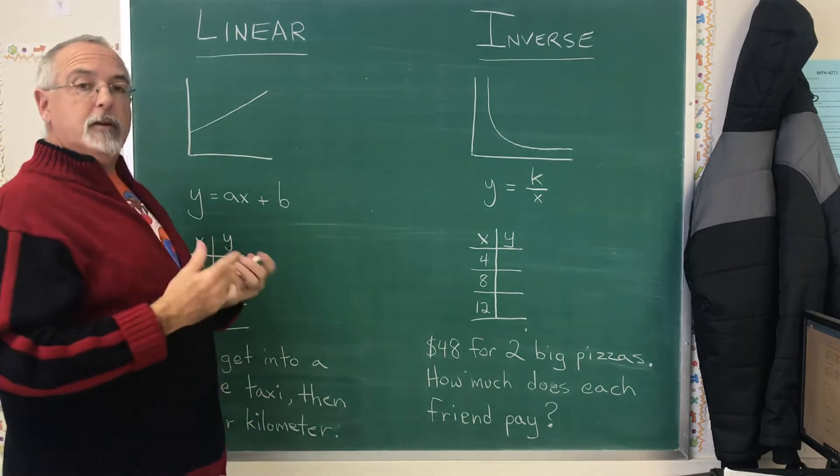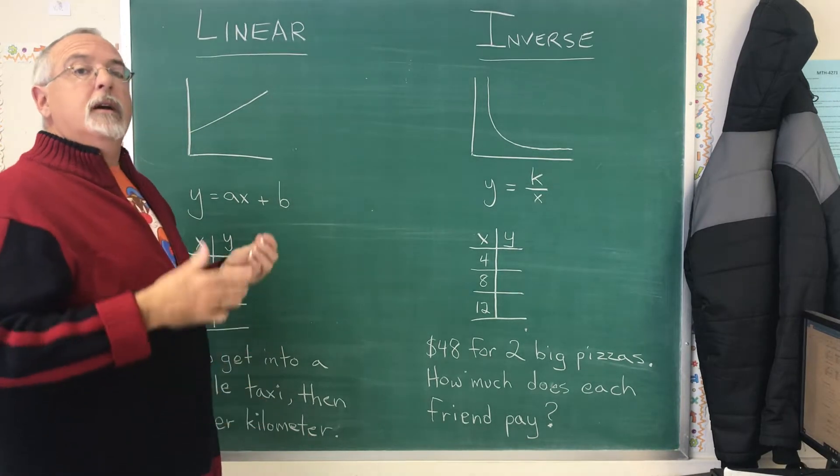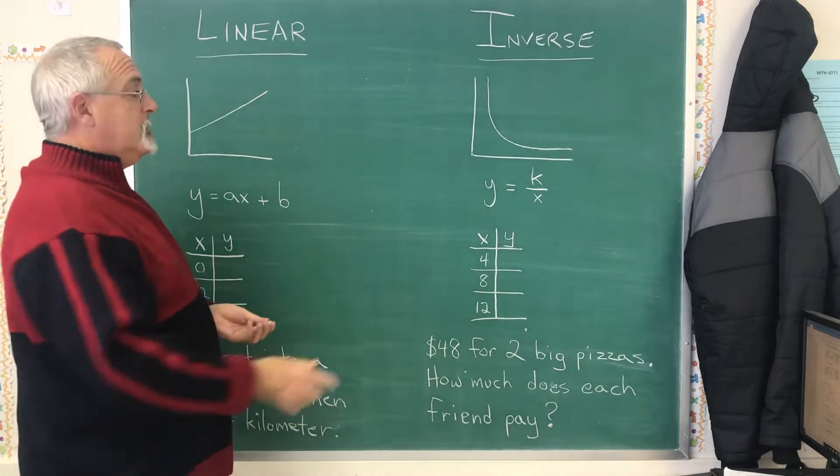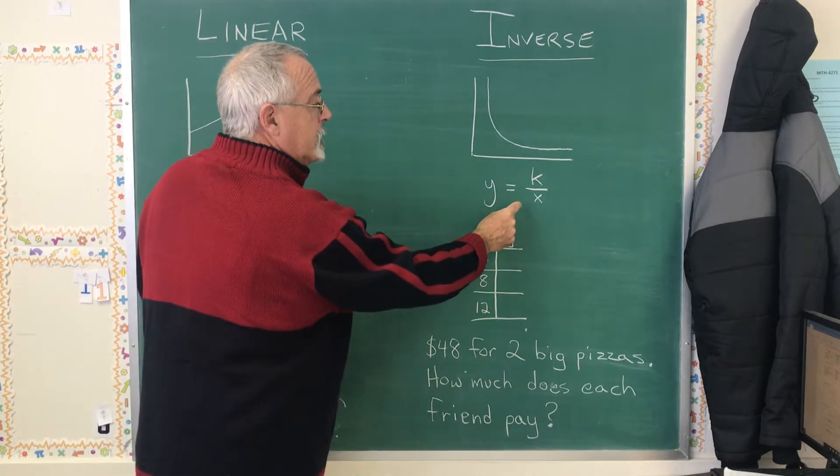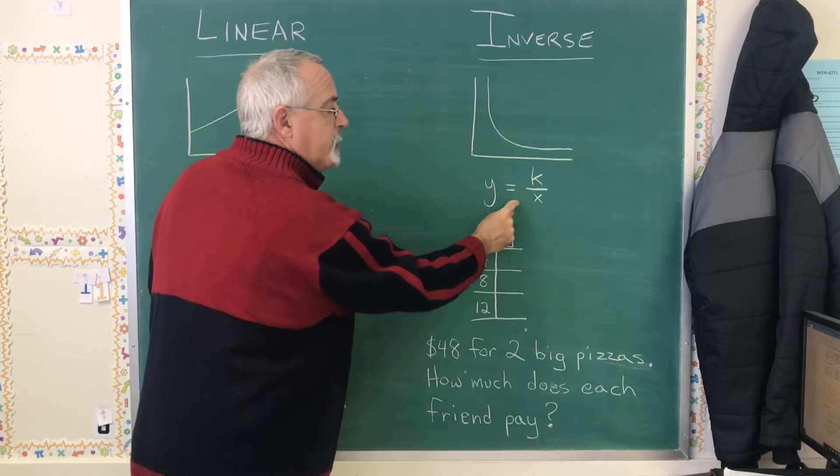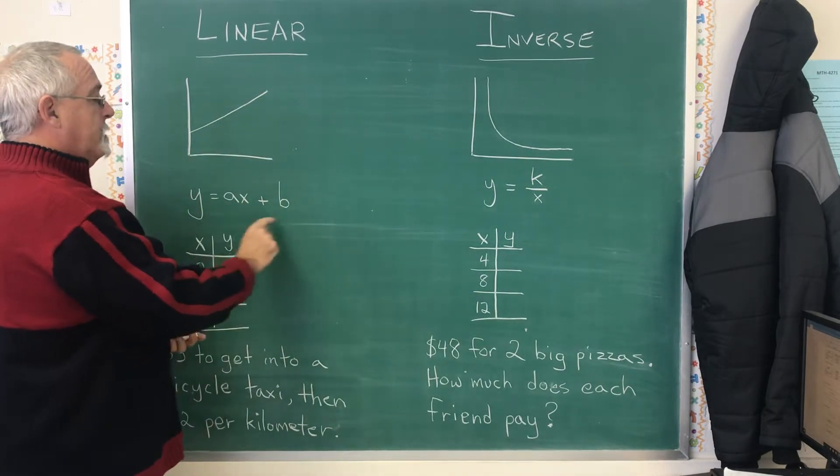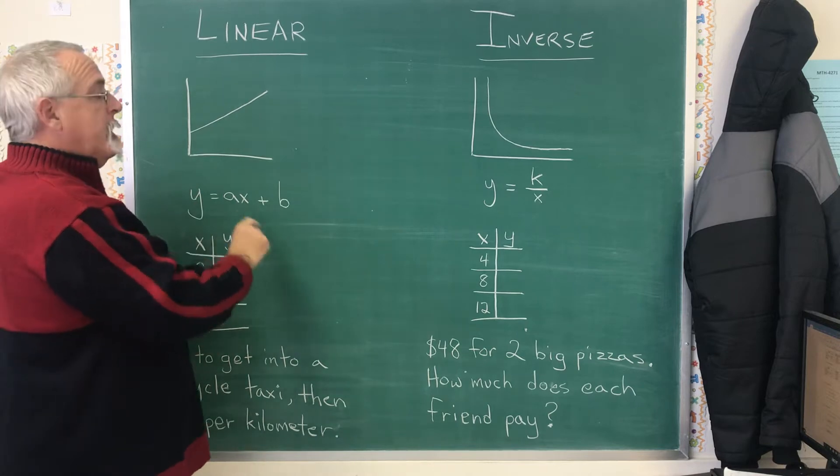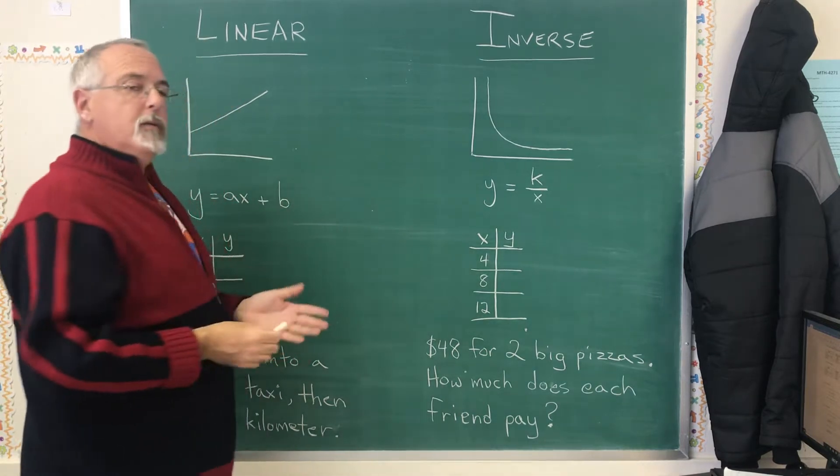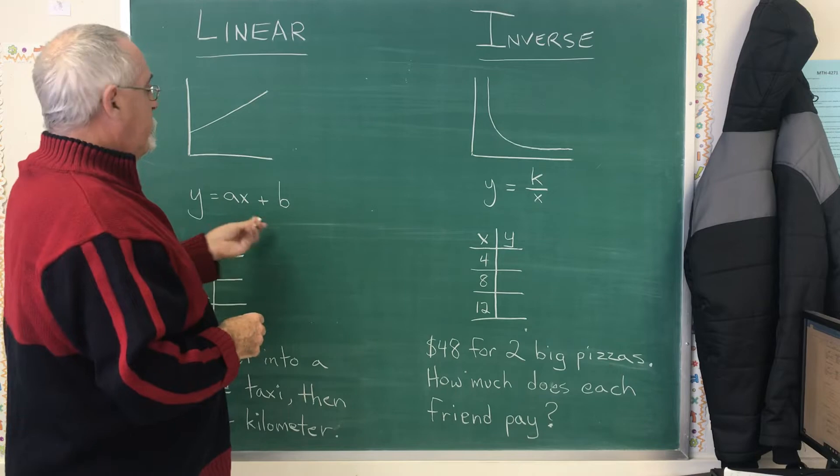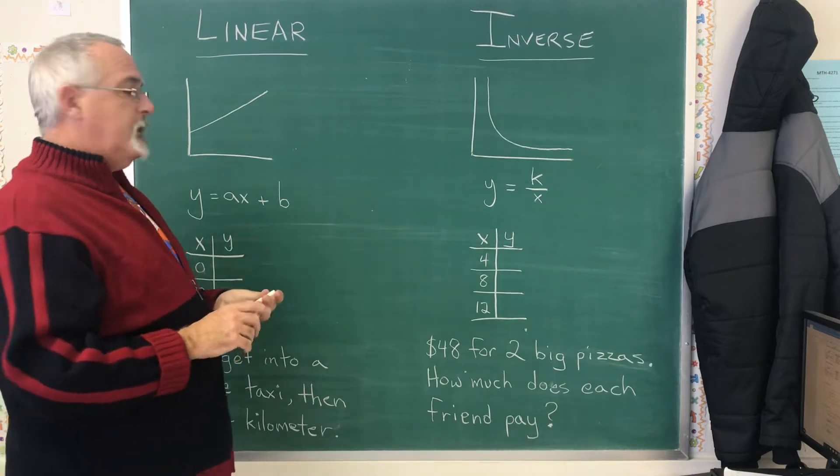And in fact, if they give us an equation, it's also not too difficult to tell at a glance. Inverse situations have an equation of this form and linear equations have this form. But they don't always give you a graph and they don't always give you an equation. They don't always make it that easy for you.